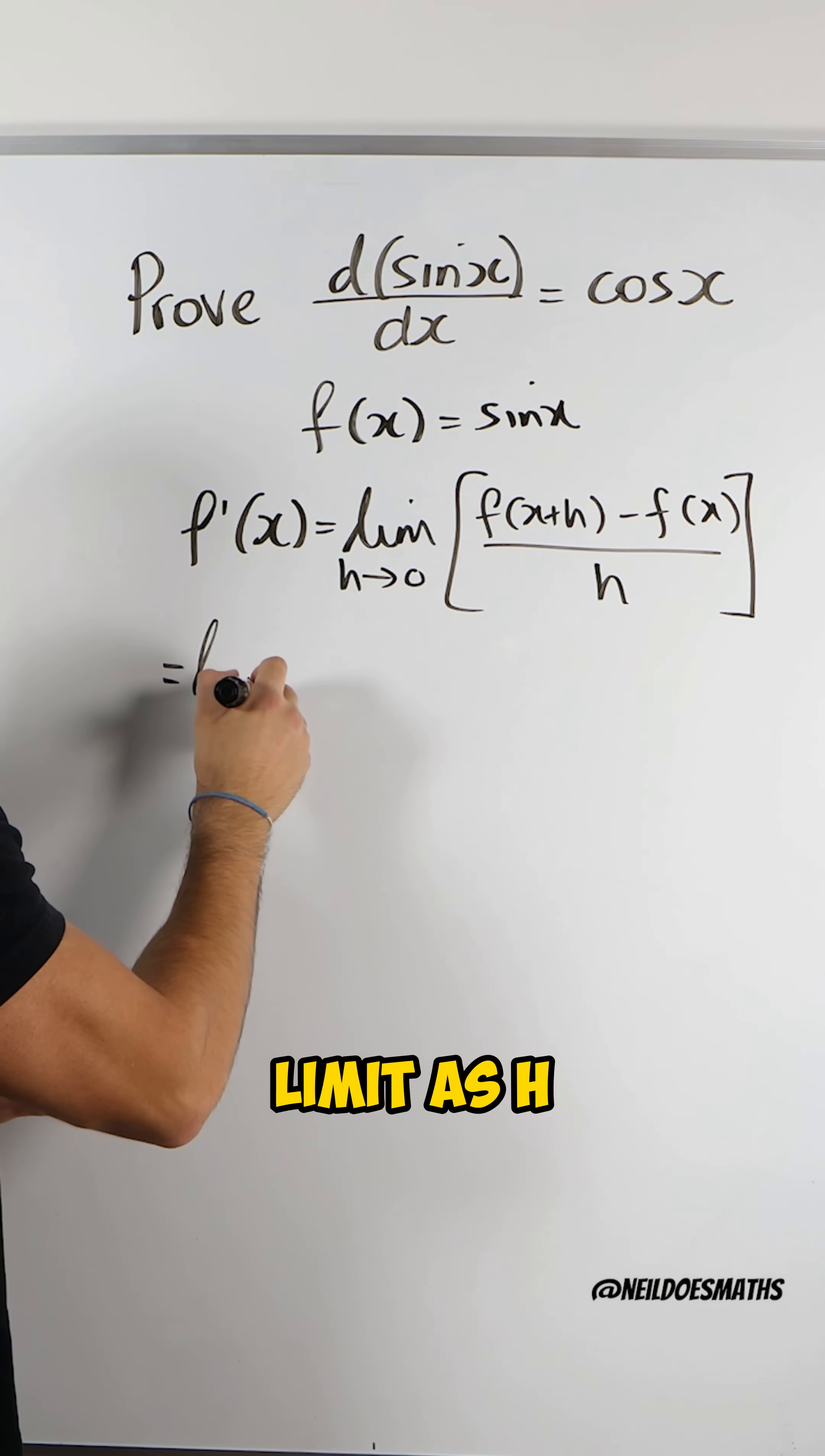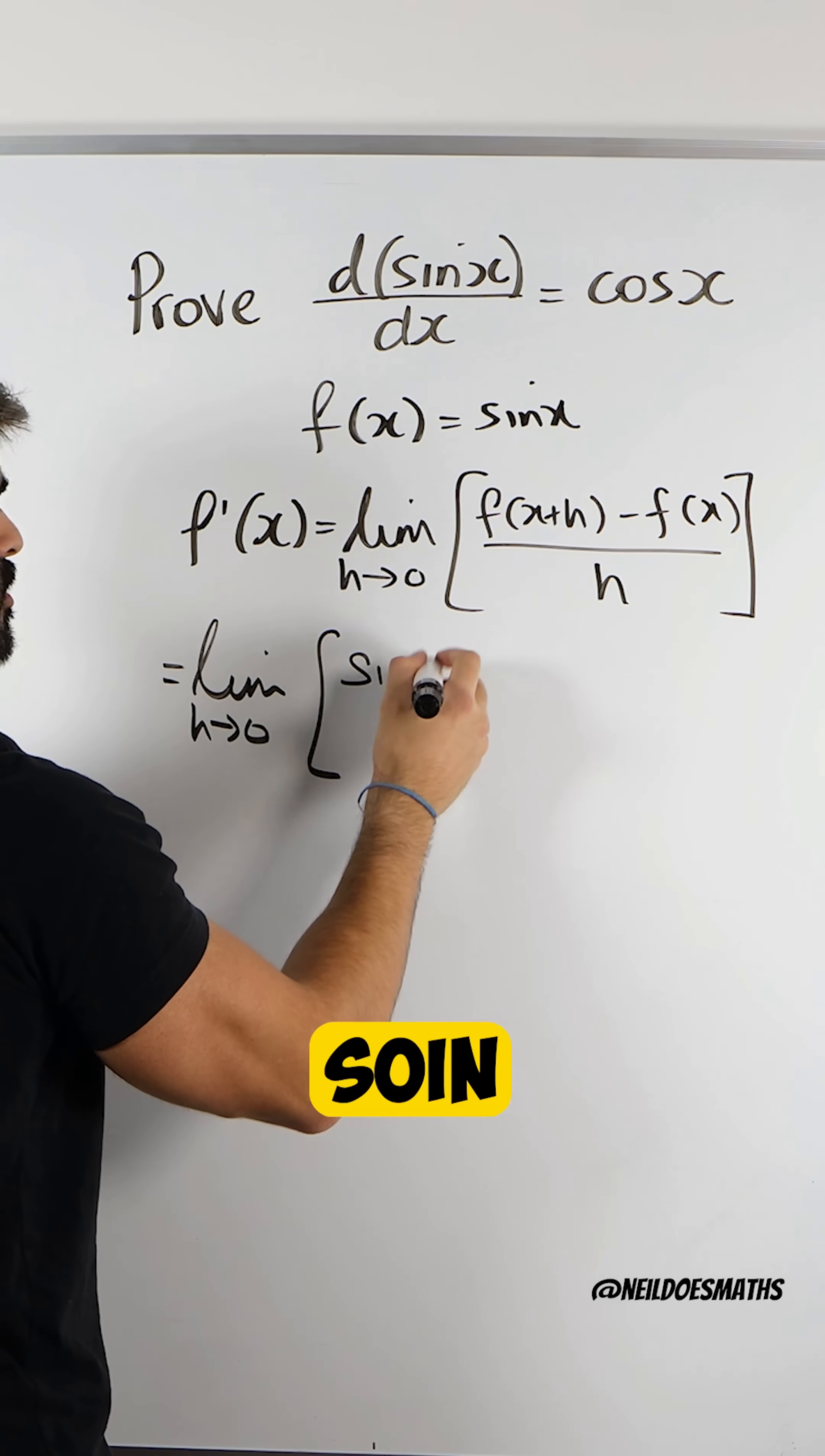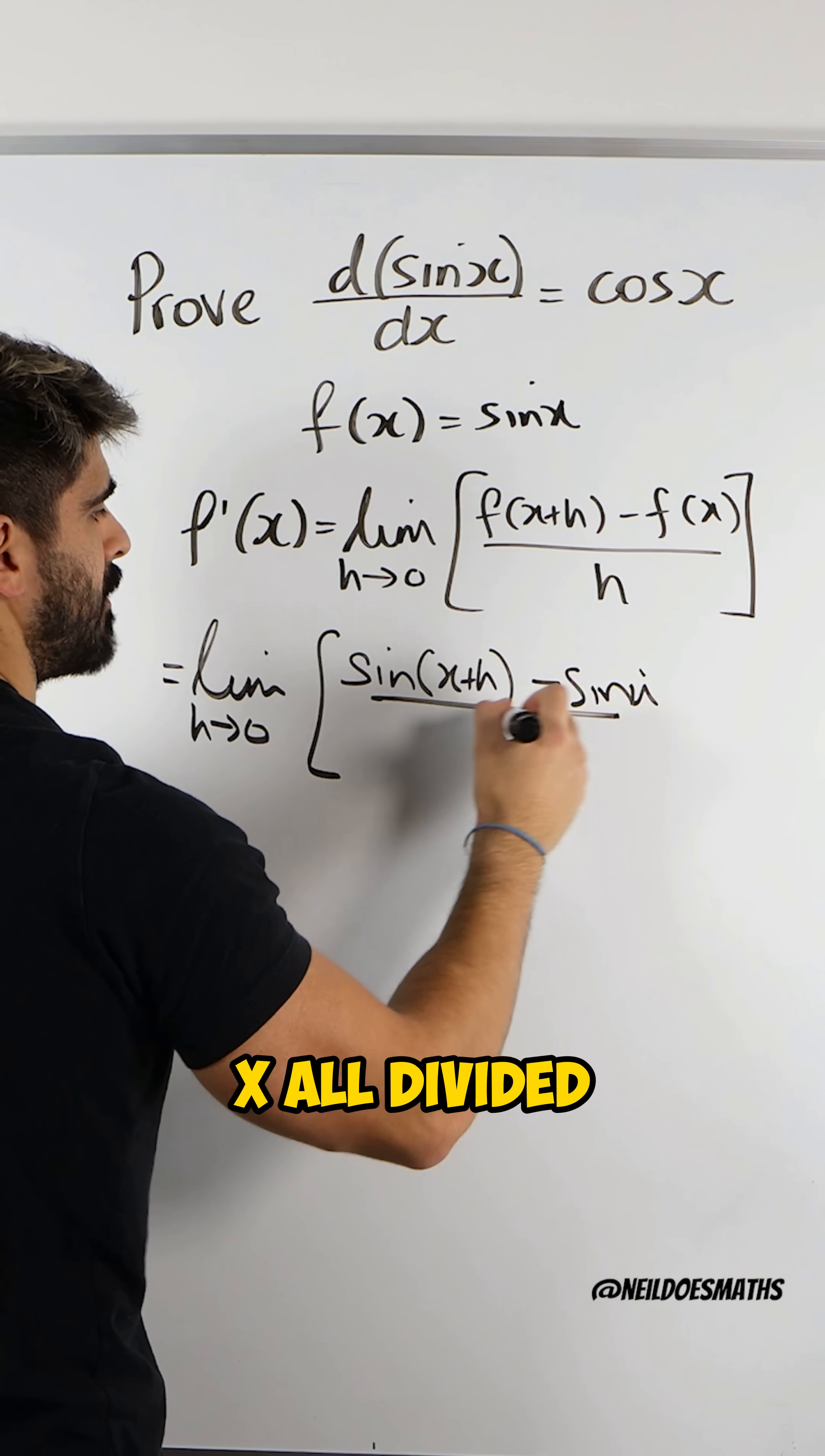It becomes the limit as h tends to 0 of—remember, we're replacing x with x+h—sin(x+h) minus f(x), which is sin(x), all divided by h.